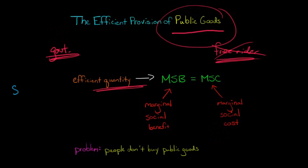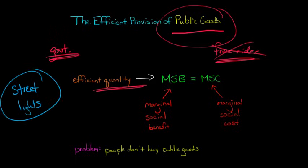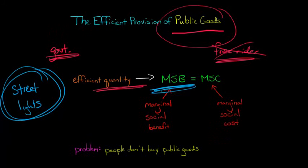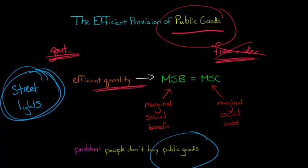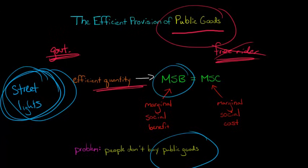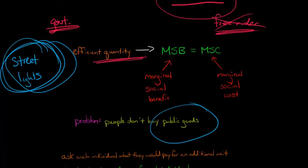Let's say, for example, that we're talking about streetlights. We're thinking of installing some streetlights in a neighborhood and trying to figure out what is the socially efficient number of streetlights. The rule is that we want the number of streetlights where marginal social benefit equals marginal social cost. Now, people don't buy public goods — they're not like private goods where we'd just ask people to go out and buy their own streetlights. So how do we figure out what the total marginal social benefit is?